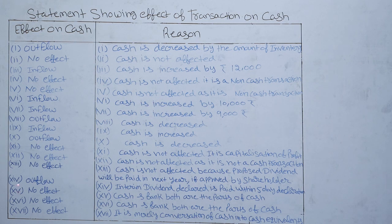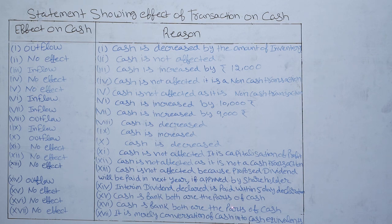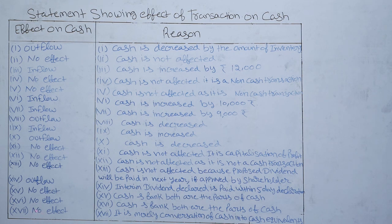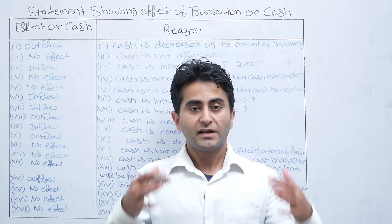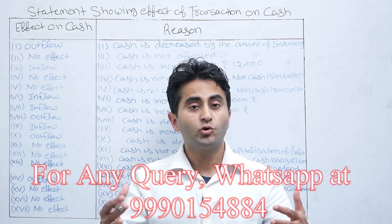For the fourteenth item — declaration of interim dividend — there is an outflow of cash. Reason: interim dividend declared is paid within five days of declaration. For the fifteenth item — cash deposited into bank — there is no effect on cash. Reason: cash and bank both are parts of cash or cash equivalents. For the sixteenth item — cash withdrawn from bank — similarly, no effect. For the seventeenth item — purchase of marketable securities for cash — no effect. Reason: it is merely a conversion of cash into cash equivalents. If you have any doubts, please let me know in the comment section. Thank you.